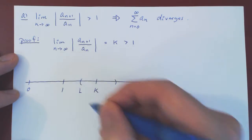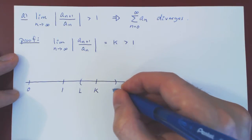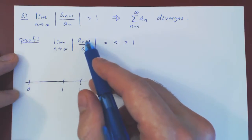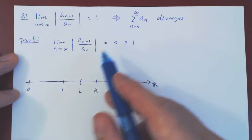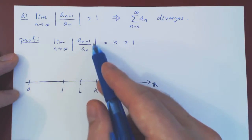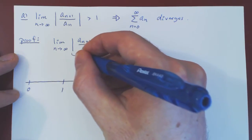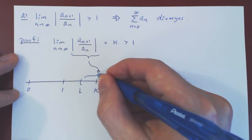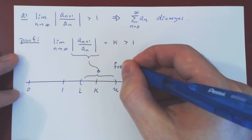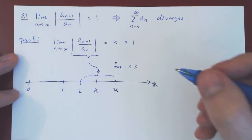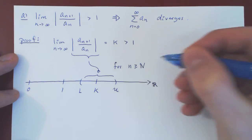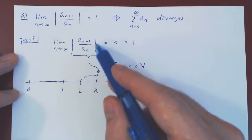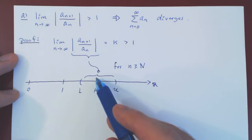Let's call the left-hand point L for lower bound and the right-hand point U for upper bound. Because by taking n to be as large as we want, we can make these terms as close as we want to k, if we take n large enough, all of these terms should lie inside this small interval. Call the smallest value N that will guarantee that if lowercase n is bigger than N, then all these terms are inside our small interval.